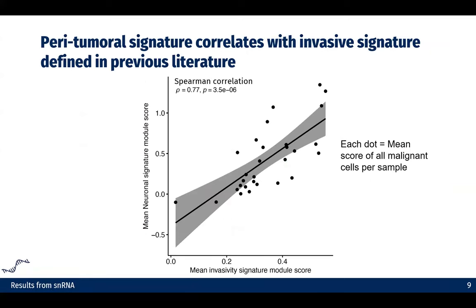We also took a signature from previous literature — an invasive signature that is experimentally derived — and correlated it with our peritumoral signature. Each dot on the plot represents one sample, taking the mean score of all the malignant cells within that sample. We are able to see a clear correlation between this invasive signature and our neuronal signature.